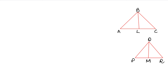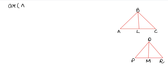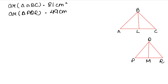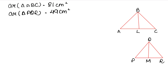Before we look at this question, first take a look at question 5 or 6. We have the areas of two triangles: area of triangle ABC upon area of triangle PQR equals 49 cm². The altitude of the first triangle, BL, is 6.3 cm. We have to find the corresponding altitude QM of the other triangle.